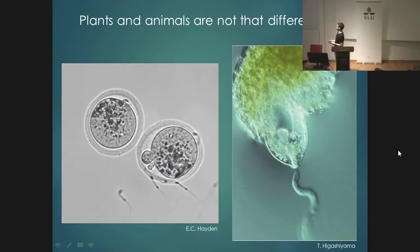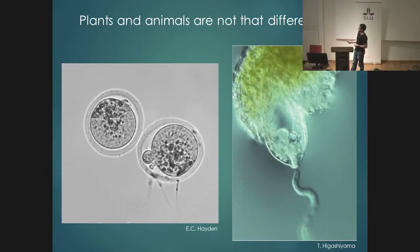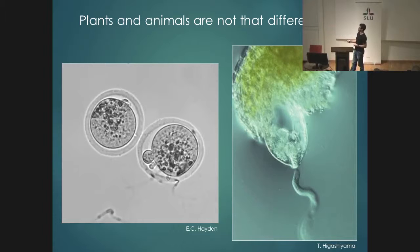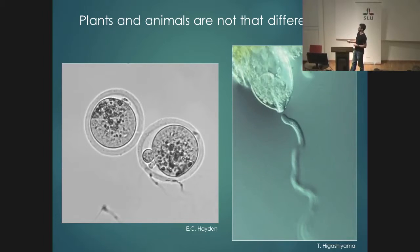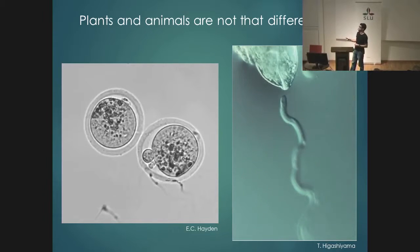And when you look at the plant's pollen tube, things are also quite similar in that the pollen tube basically tries its best in order to find an ovule.